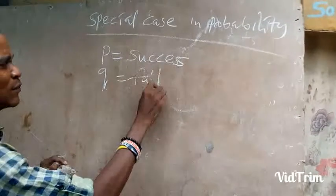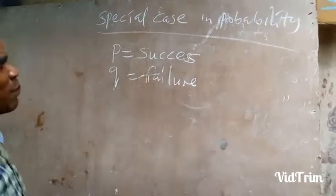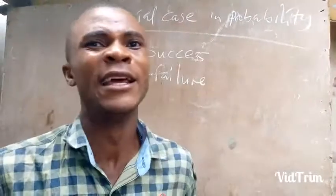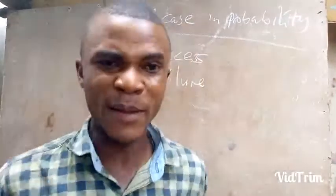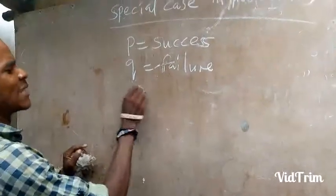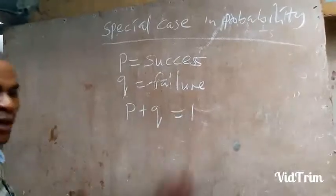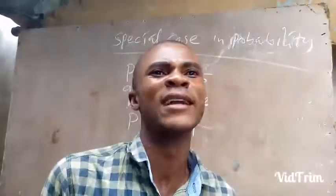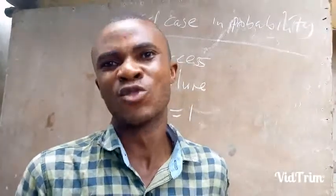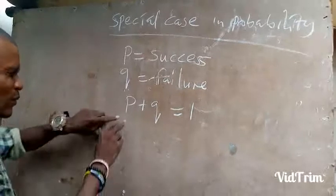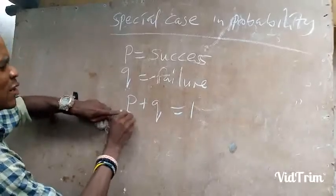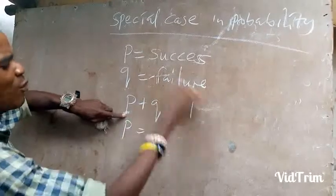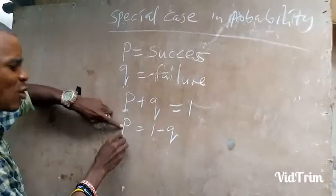When you see Q, it means the person is going to fail — that is failure. So P represents the success of the event; if a person is taking an exam, the person will pass — that is P. If the person fails the exam, it is represented by Q. Anytime we add success and failure in probability, we get an answer of one. Success plus failure equals one. So to find success, it is one minus the failure; to find failure, it is one minus the success.